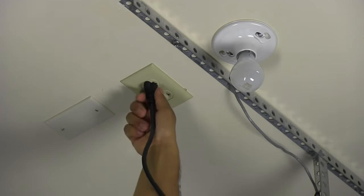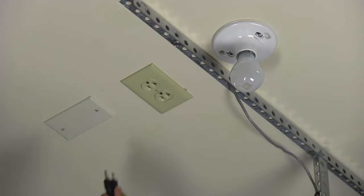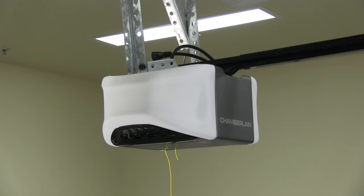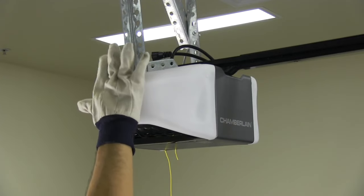First, unplug the garage door opener. Open the light lens on the garage door opener to access the battery compartment.